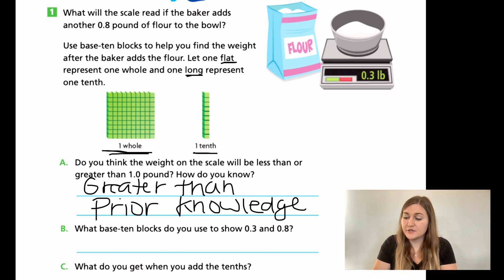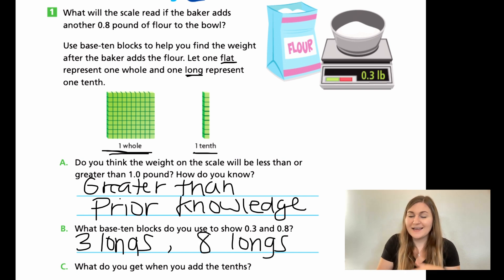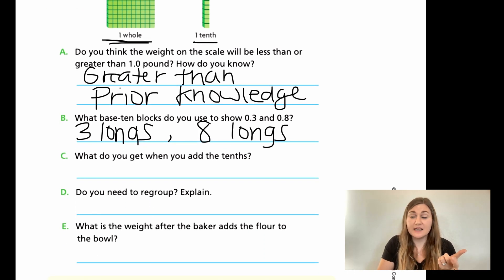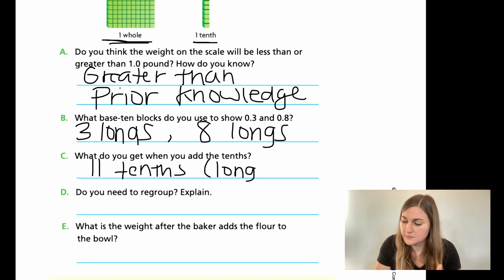For B, what base 10 blocks are you going to be showing? For 0.3, remember that's in the tenth. So I'm going to need three longs. That's the name of those bars. And then for 0.8, I need eight of the longs. Then it kind of gives it to you. So what do you get when you add the tenths together? When I add them all together, I'm going to have 11 longs or 11 tenths. And I'm just going to put in parentheses, those are the longs that we're talking about.